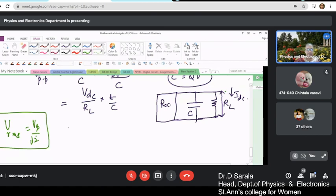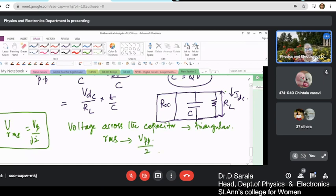Now we have seen that the voltage across the capacitor was triangular. So the rms of this triangular voltage can be given by v_peak by 2√3. It is not simply v_peak by √2 as was the case for sine and cosine. Since it is triangular, this is given by this relation.